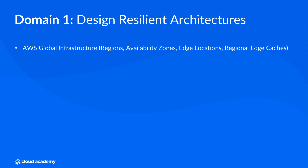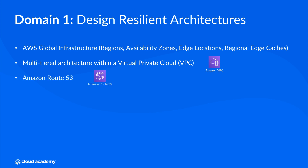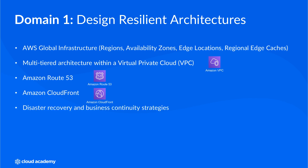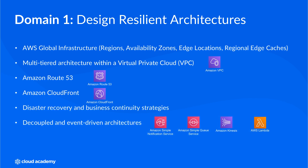With this in mind, you'll be introduced to the AWS Global Infrastructure, providing you with a foundation of how the underlying architecture is pieced together on a global scale. We shall discuss how to implement a multi-tier architecture within a VPC, using multiple subnets and networking components. You will also be introduced to Amazon Route 53 and Amazon CloudFront, and some common disaster recovery and business continuity strategies. You will learn the differences between decoupled and event-driven architectures and some of the services that allow you to implement such solutions, such as the Amazon Simple Notification Service, the Amazon Simple Queue Service, Amazon Kinesis, and AWS Lambda. From a storage perspective, you will gain a deeper understanding of storage services including Amazon S3, AWS Storage Gateway, and Amazon EFS, to name but a few.